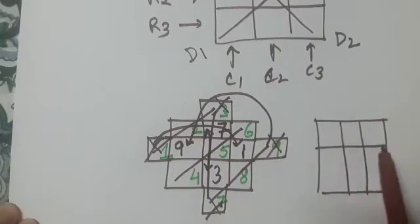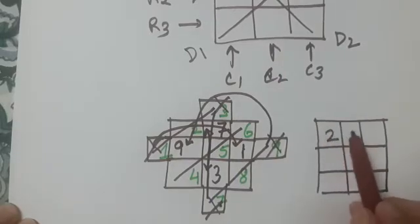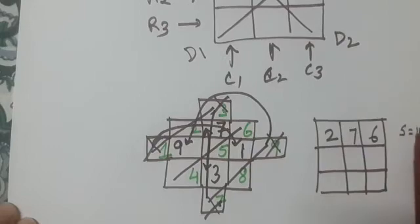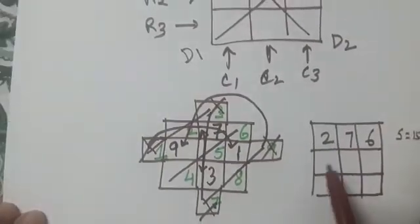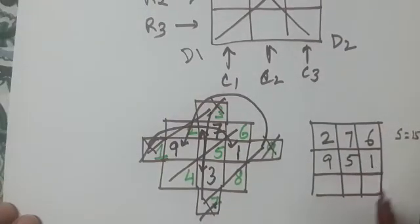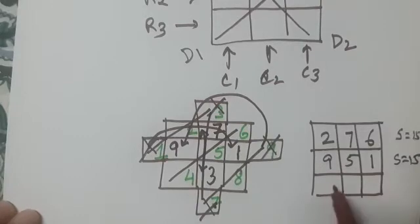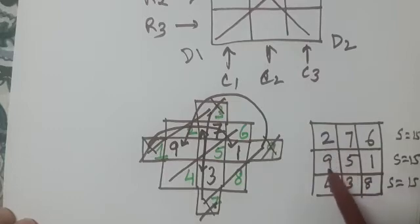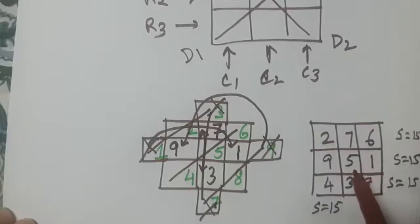If you look at the answer, the numbers in these boxes are: first row — two, seven, six. You add them and the sum is fifteen. In the second row you have nine, five, and one — the sum is also fifteen. Similarly, in the third row the numbers four, three, and eight give a sum of fifteen. Now check the diagonals: two plus nine plus four gives fifteen, and seven plus five plus three also gives fifteen.